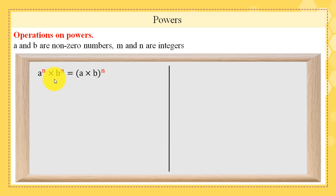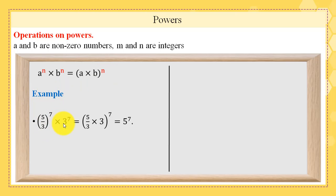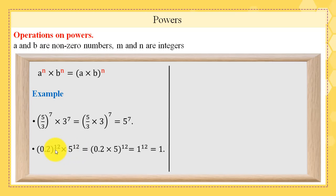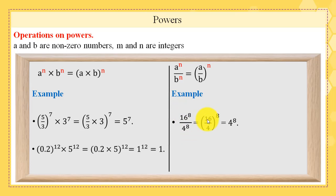Third property: A^N times B^N equals (AB)^N — different bases with the same power, multiply the bases and keep the power. Example: (5/3)^7 times 3^7 equals (5/3 times 3)^7 equals 5^7. Also, 0.2^12 times 5^12 equals (0.2 times 5)^12 equals 1^12 equals 1. Fourth property: A^N over B^N equals (A/B)^N. Example: 16^8 over 4^8 equals (16/4)^8 equals 4^8. Also, (3/5)^3 equals 3^3 over 5^3 equals 27 over 125.